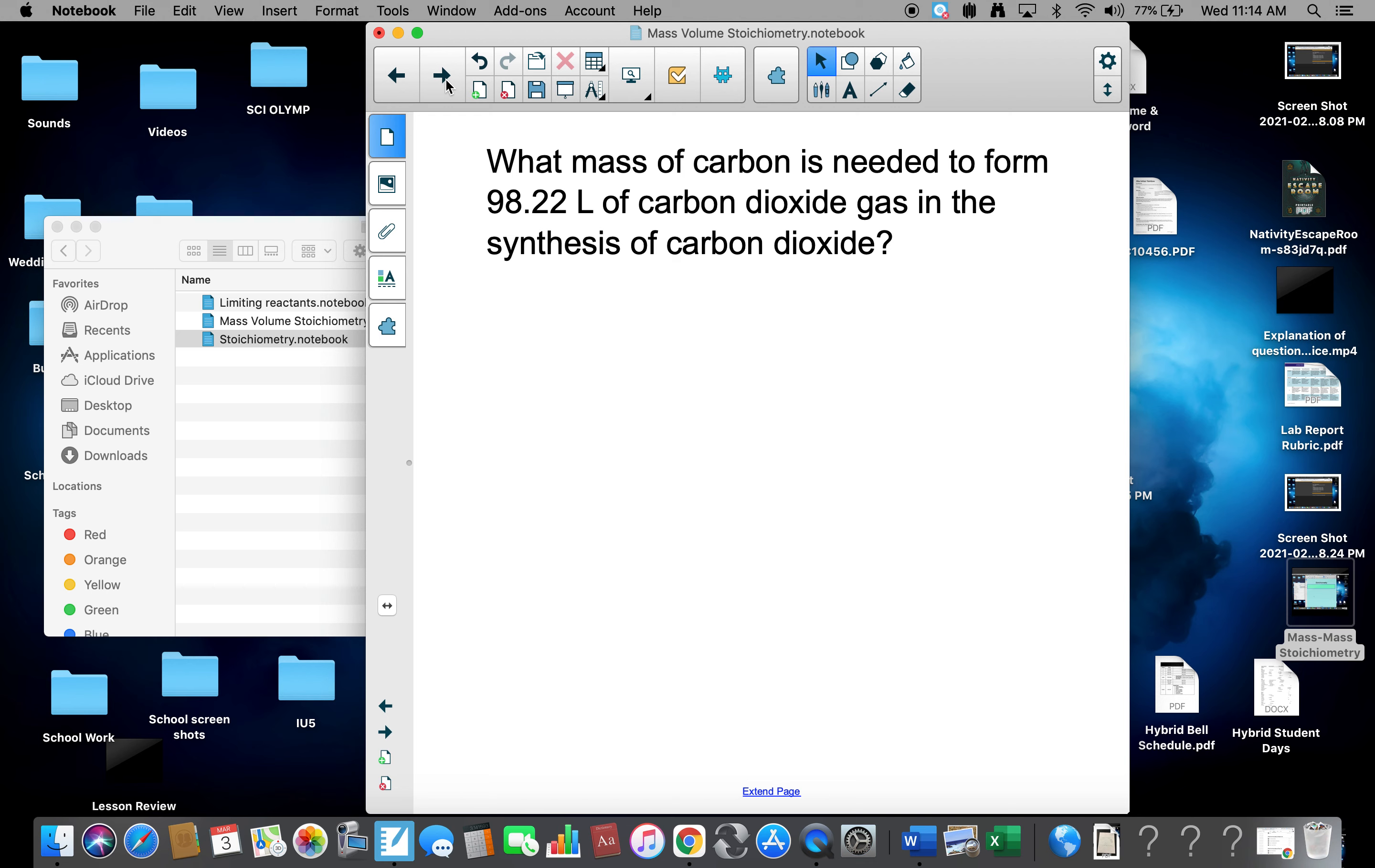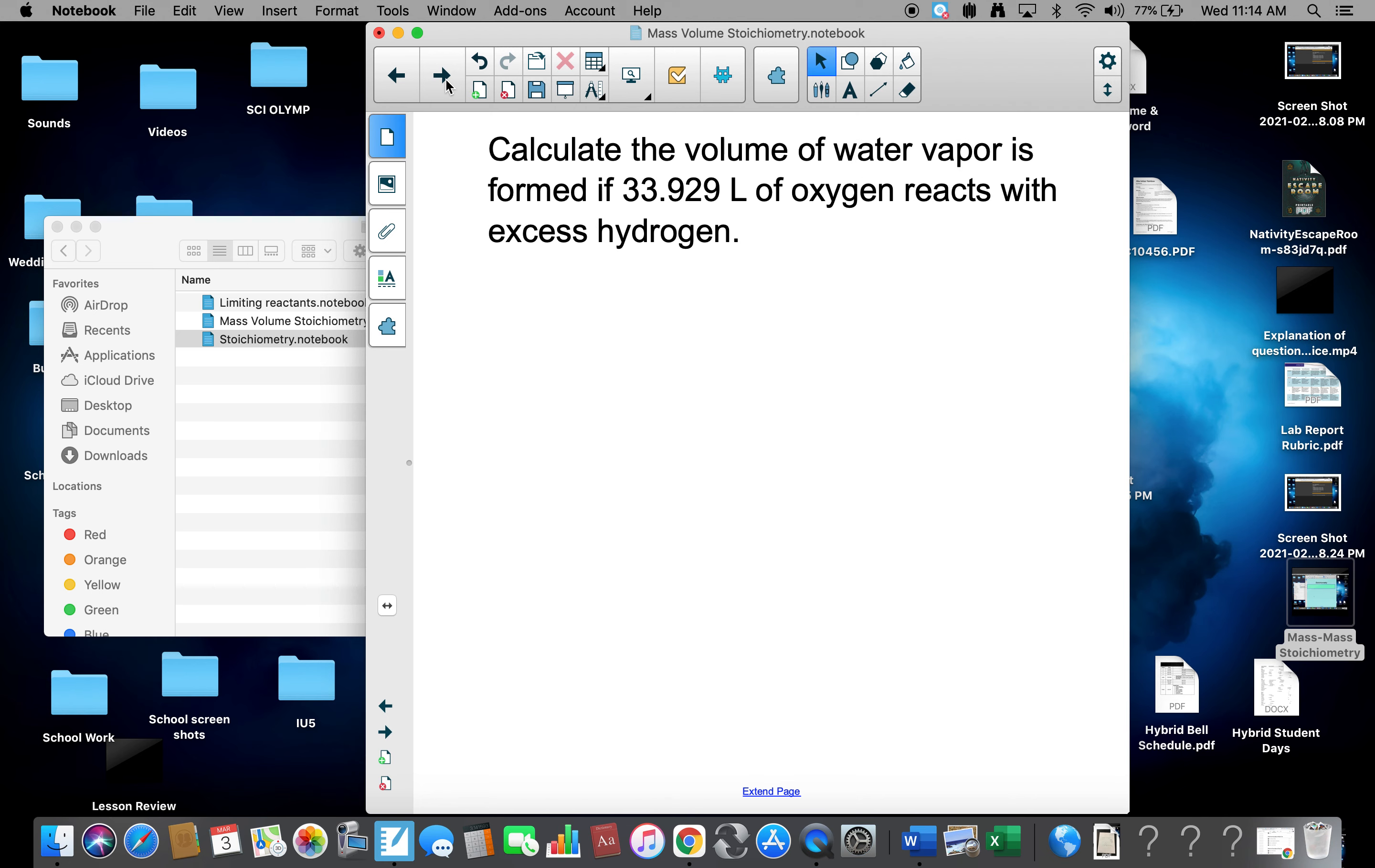Copy this one, do in class: What is the mass of carbon needed to form 98.22 liters of carbon dioxide gas? And calculate the volume of water vapor formed if 33.929 liters of oxygen react with excess hydrogen.